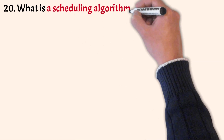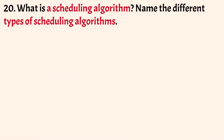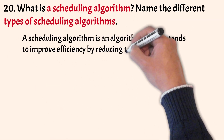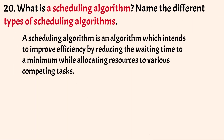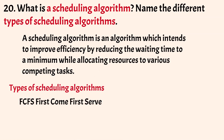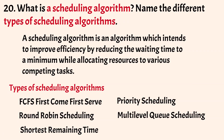What is a scheduling algorithm? A scheduling algorithm is an algorithm that improves efficiency by reducing waiting time to a minimum while allocating resources to various competing tasks. Types of scheduling algorithms include first come first serve, priority scheduling, round robin scheduling, multilevel queues scheduling, shortest remaining time, and shortest job first.